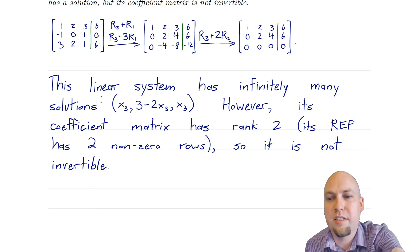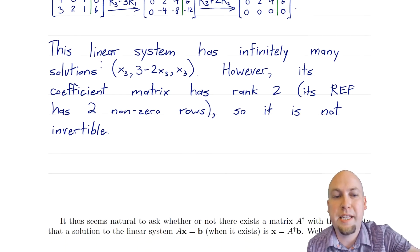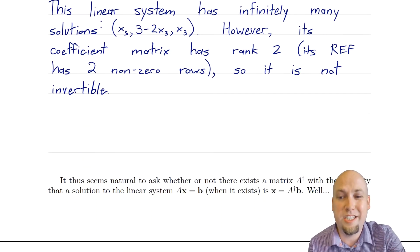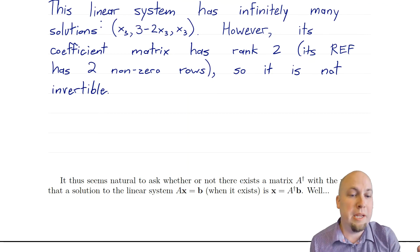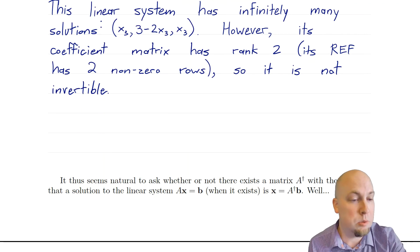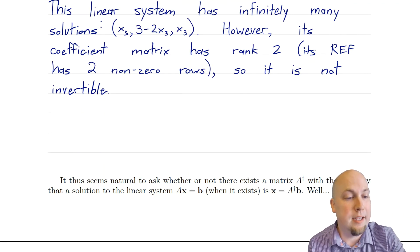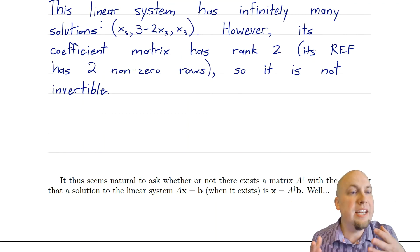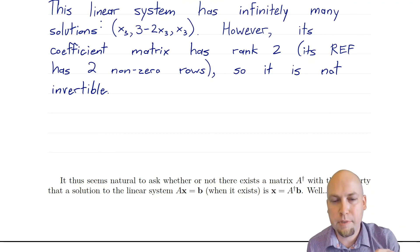You can have a solution of a linear system even if the coefficient matrix is not invertible. So what we would like to do is be able to find some matrix — which we'll call A-dagger — with the property that if a solution of the linear system exists, it's x equals A-dagger times B, even if A is not invertible.